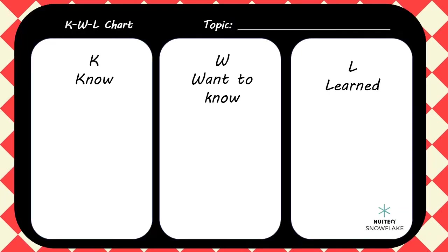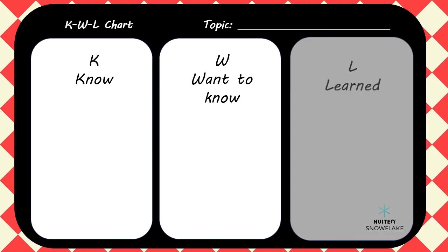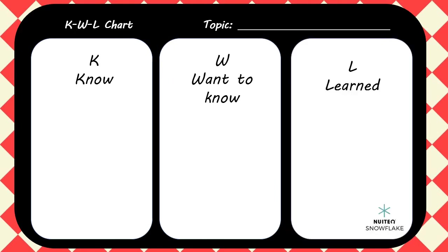A KWL chart can help you organize your ideas. Write what you know about the topic, then ask questions about what you want to know, and finally write the answers to those questions in the learn column. This is an easy and effective strategy to keep facts in place.